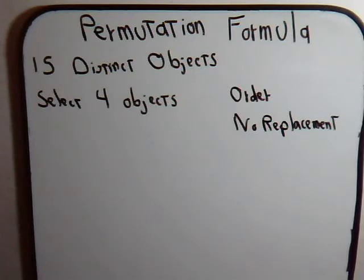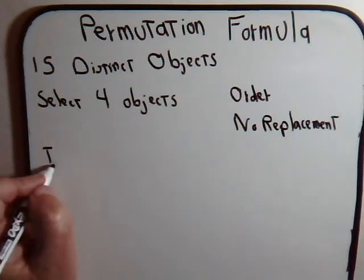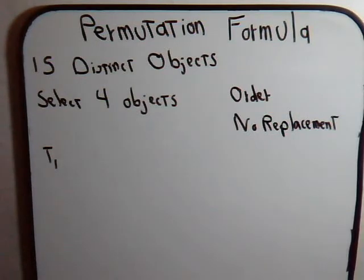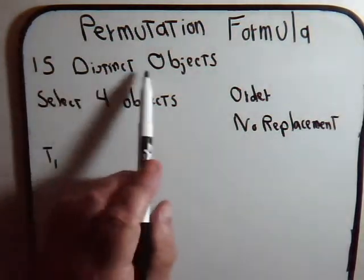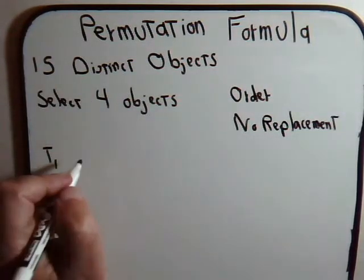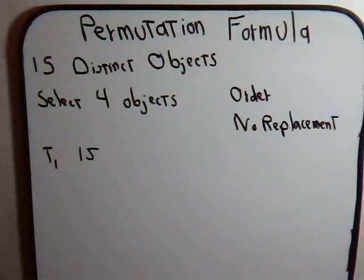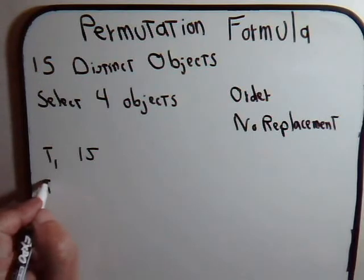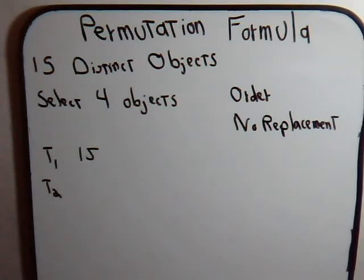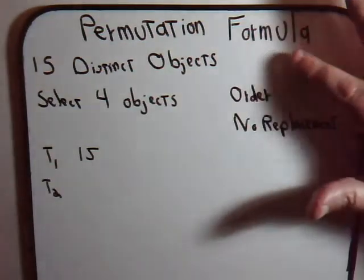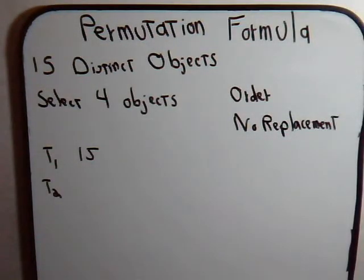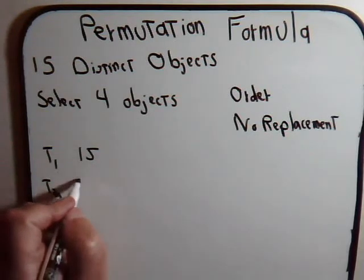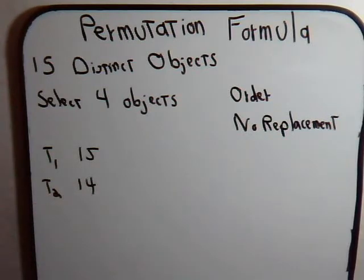So how many different ways can we select these 4 different objects? Well for this specific problem we can use the general counting principle to get our answer, because we have 4 tasks to perform. The first one of course is just select the first object. And when we select that first object we've got 15 to choose from. So to perform our first task that can be done in 15 different ways. The next task T2 is to select the second object. Now when we do this, one of the objects from here in the group of 15 is missing. So to perform task T2 we have 14 objects to choose from. So there's 14 different ways of performing task T2.